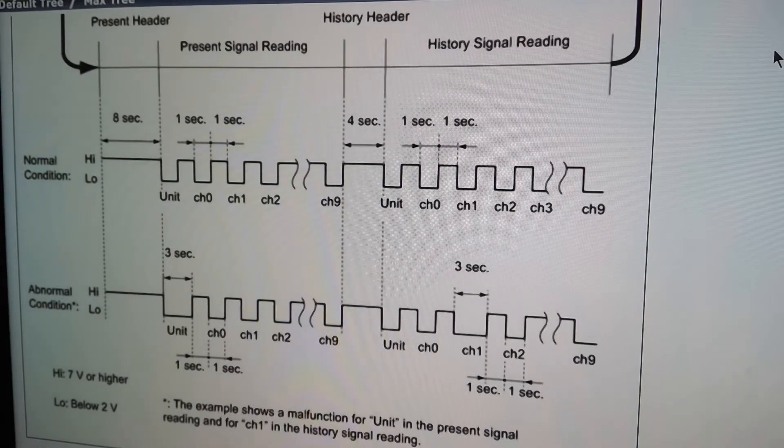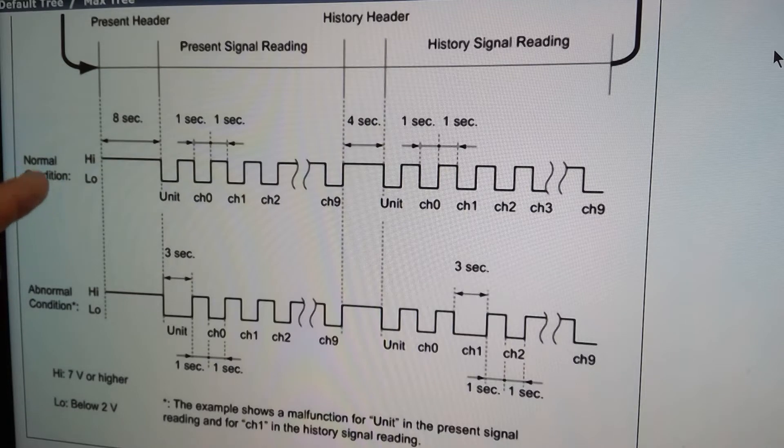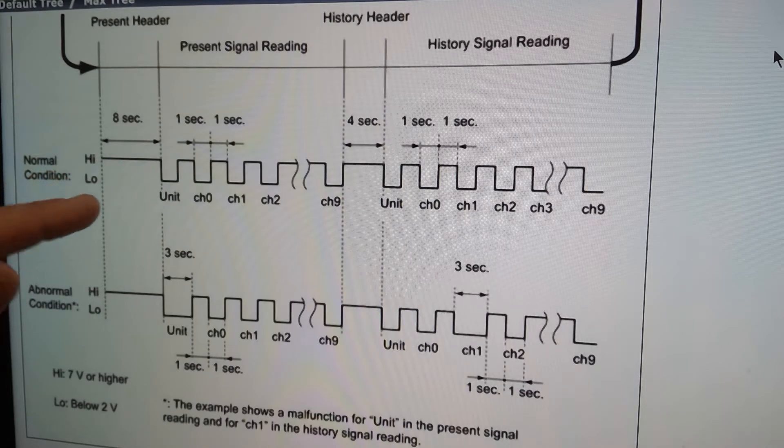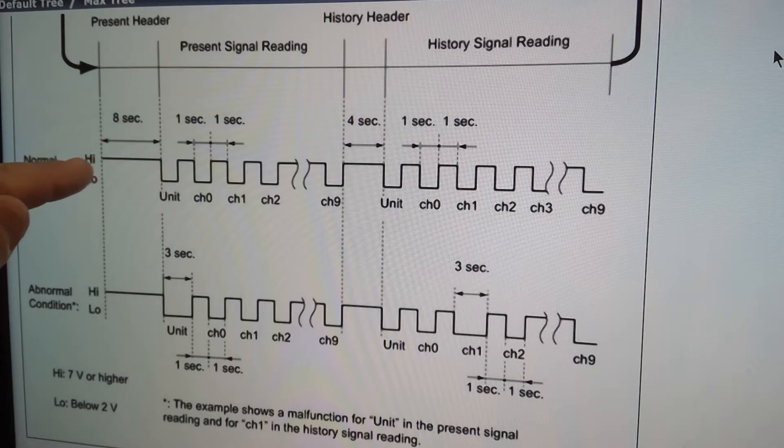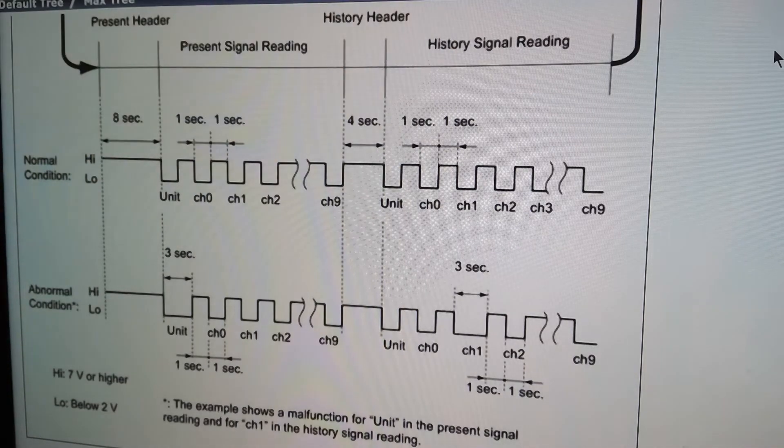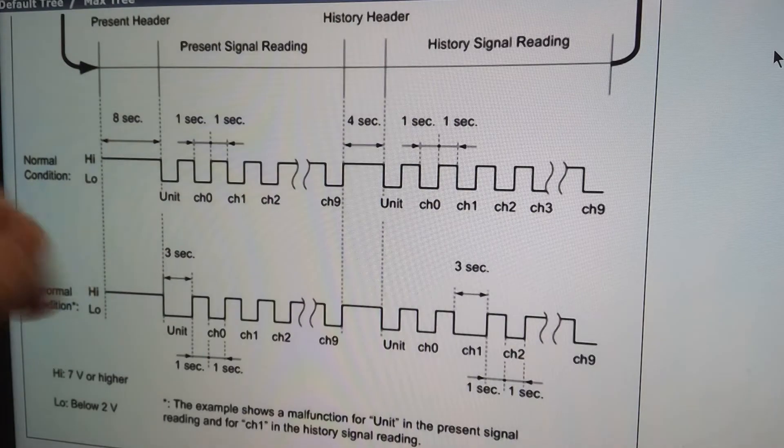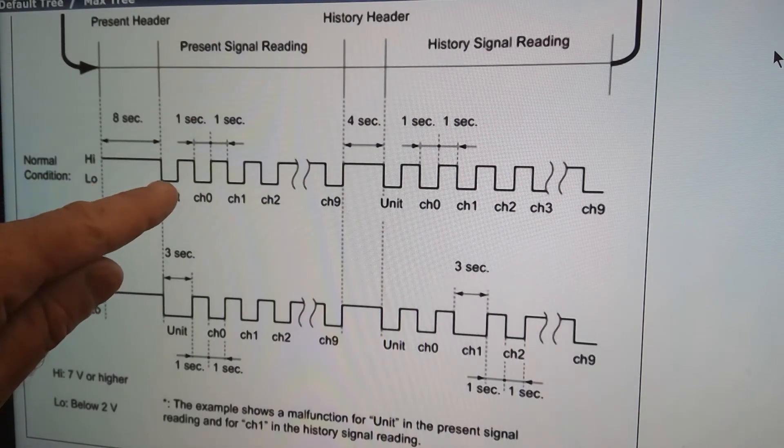Our normal condition is this: looking at the voltmeter, you're looking at 12 volts or zero volts. You look for your 8-second 12-volt signal; that's the beginning of the loop. It's always a continual loop. Under normal conditions, it does a unit check first.